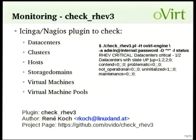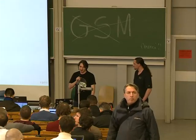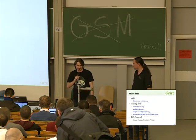As we were talking about monitoring, I want to introduce another project: a monitoring plugin for Icinga and Nagios written in Perl, where you can monitor all your data centers, clusters, hosts, virtual machines, and more. It uses the REST API Mike introduced before. If you have questions, please check out the oVirt wiki for more information, join the mailing list, or join us on IRC.